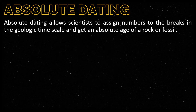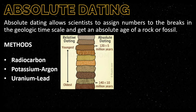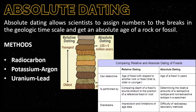We have three methods in absolute dating: radiocarbon dating, potassium-argon dating, and uranium-lead dating. This figure shows the difference between relative dating and absolute dating. In relative dating, you will just know which is the youngest and which is the oldest. In absolute dating, you will know the exact age, what we call the absolute age. This table compares the two methods.